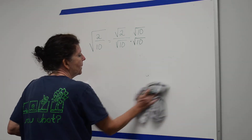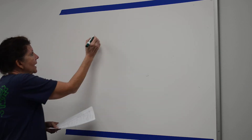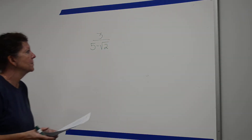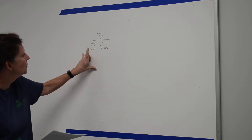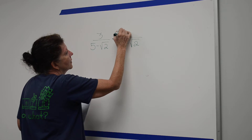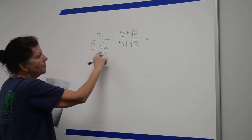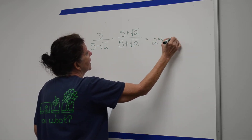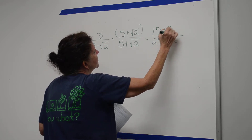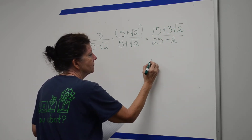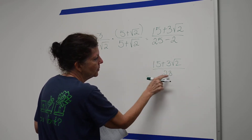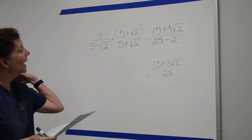We also did one where I had a binomial on the bottom. If I have 3 over 5 minus the square root of 2, I have to get rid of the square root on the bottom, but I can't just multiply by the square root of 2 because distributing it would leave a radical with the 5. So I multiply the top and bottom by its conjugate. On the bottom, using FOIL: first and last gives 25 minus 2, which is 23. On top, distributing gives 15 plus 3 on the square root of 2.